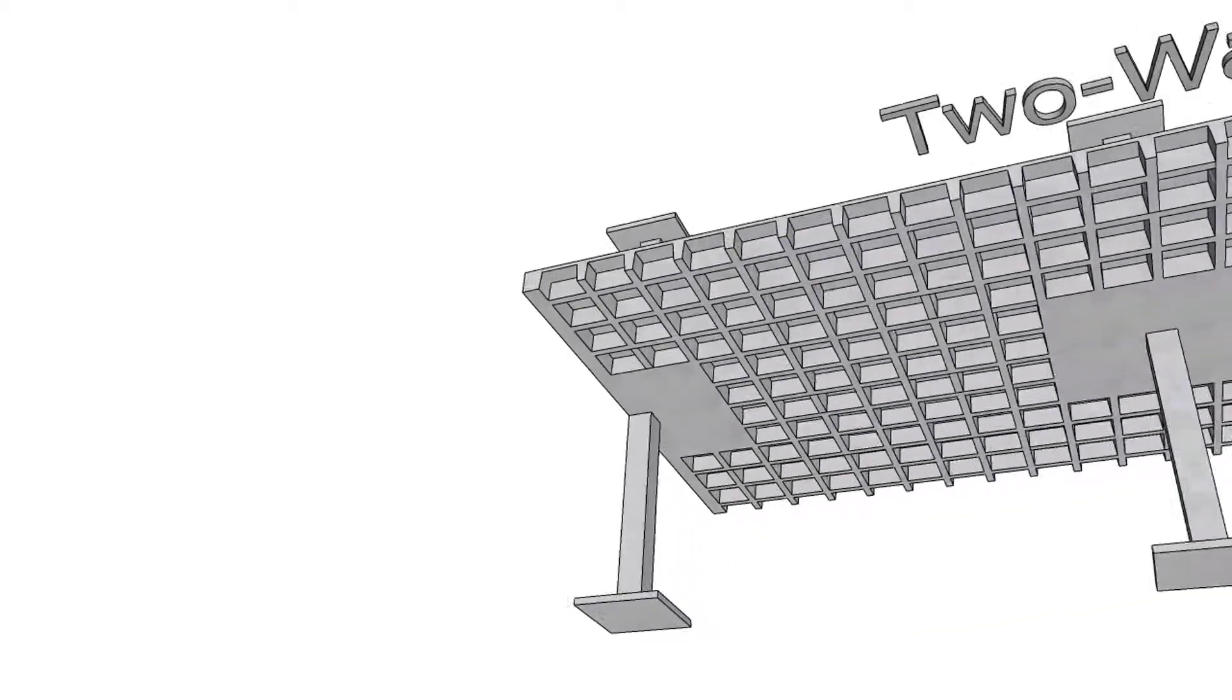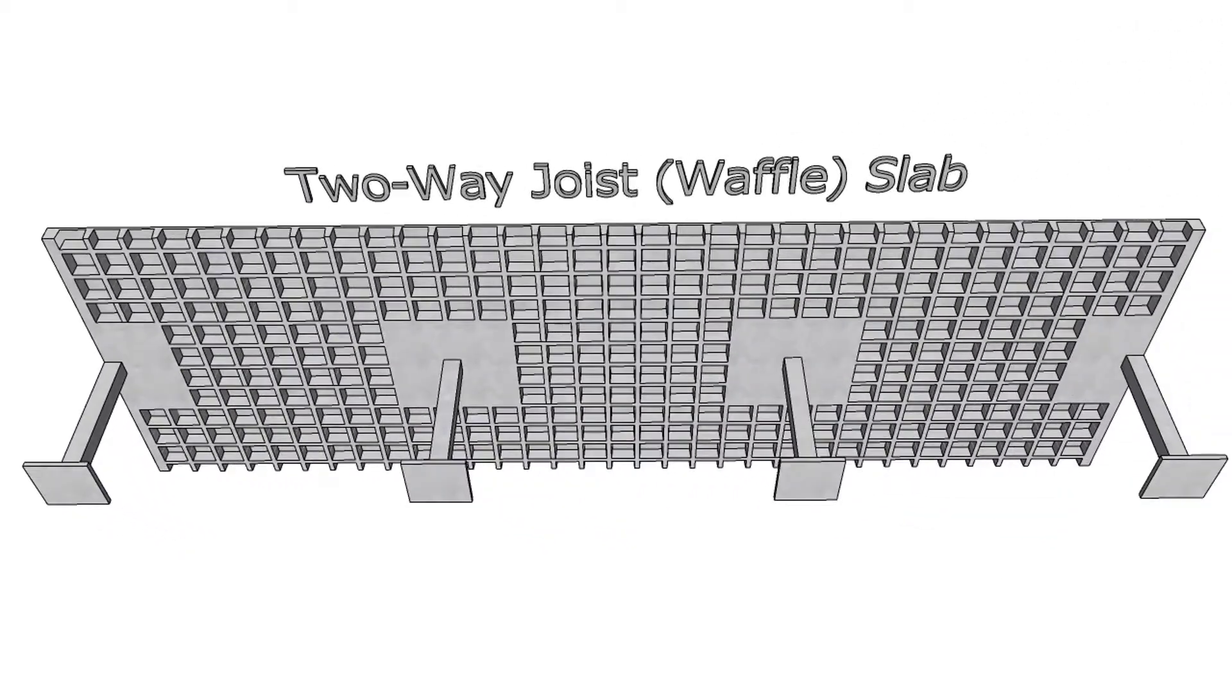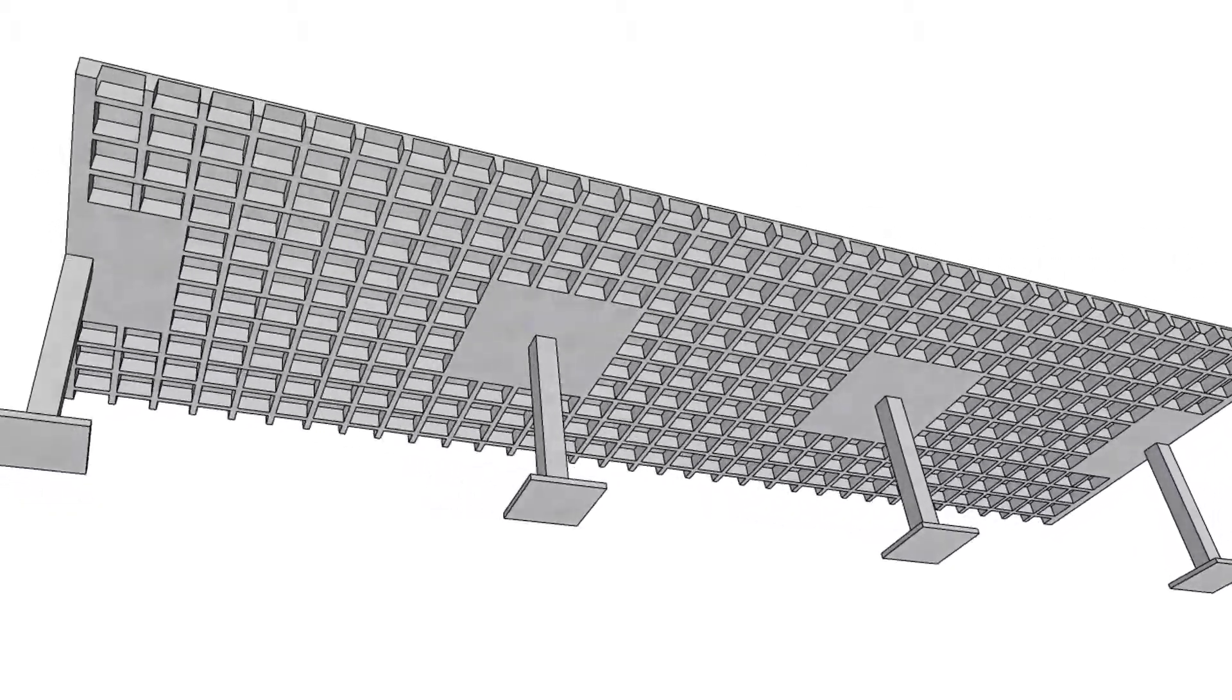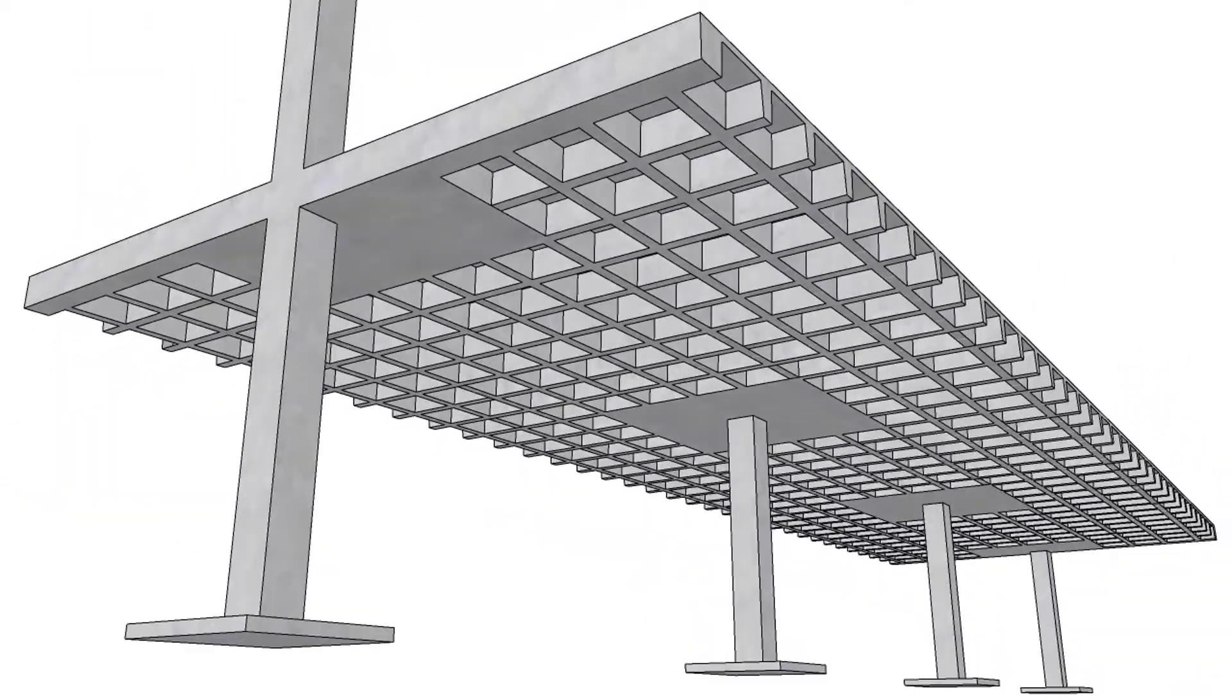Two-way joist or waffle slab systems are comprised of evenly spaced concrete joists spanning in both directions and a reinforced concrete slab cast integrally with the joist.